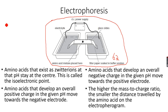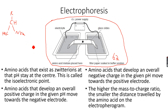For example, one of the amino acids in the mixture is this one. You know that amino acids at neutral pH exist as zwitterions, but they have something called the isoelectric point. So if the isoelectric point of this particular amino acid is 6.2, it means that at pH 6.2 it exists as a zwitterion.